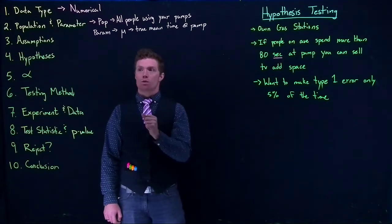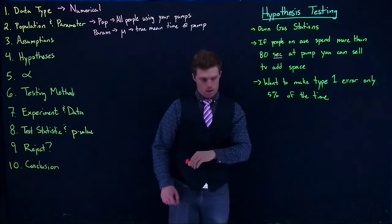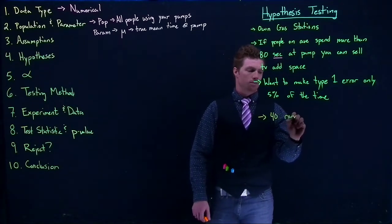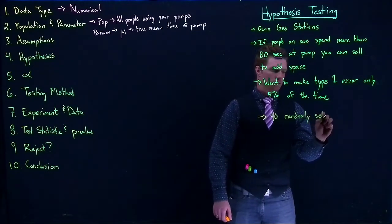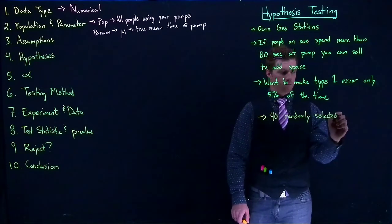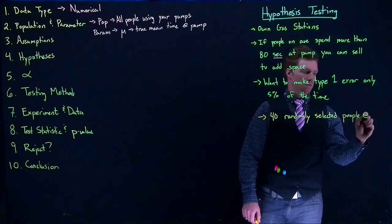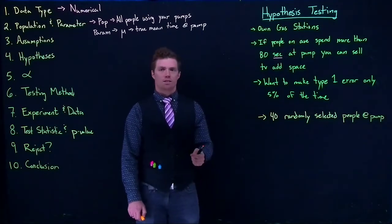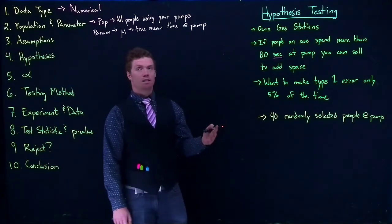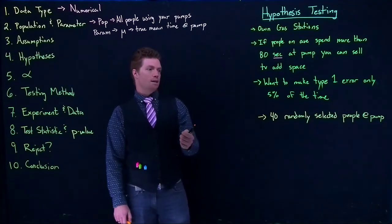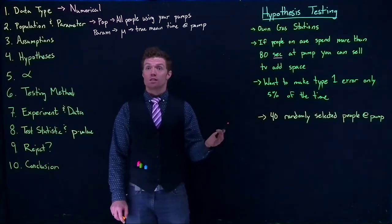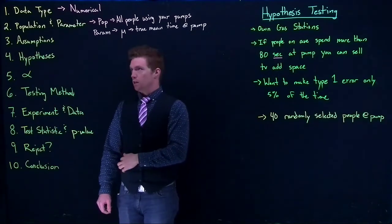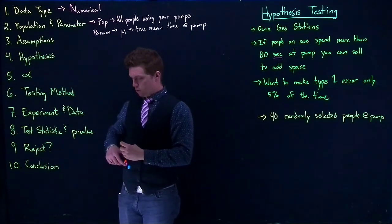Since I can't assume normality, I can invoke the central limit theorem. We take a sample size of 40 randomly selected people at the pumps, take a stopwatch, and measure how long they stay. With n=40 and a randomly selected representative sample, we can invoke the central limit theorem, and the sampling distribution will be normal. We are good to go.